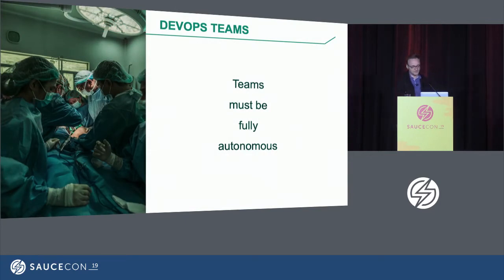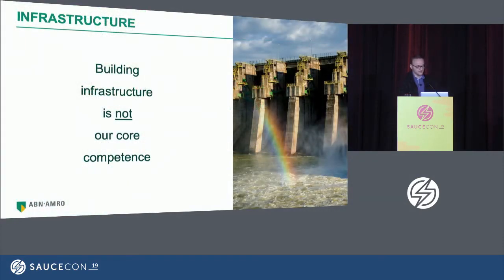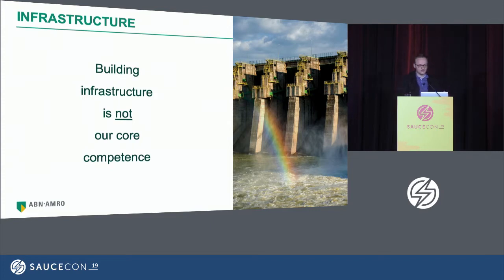Another principle is that teams must be fully autonomous. Even though I technically belong to a support team, we want every single team to be able to completely do everything by themselves — no support necessary. We are a bank; we provide financial services. We are not an IT company that has to build infrastructure, so that's not what we do best.